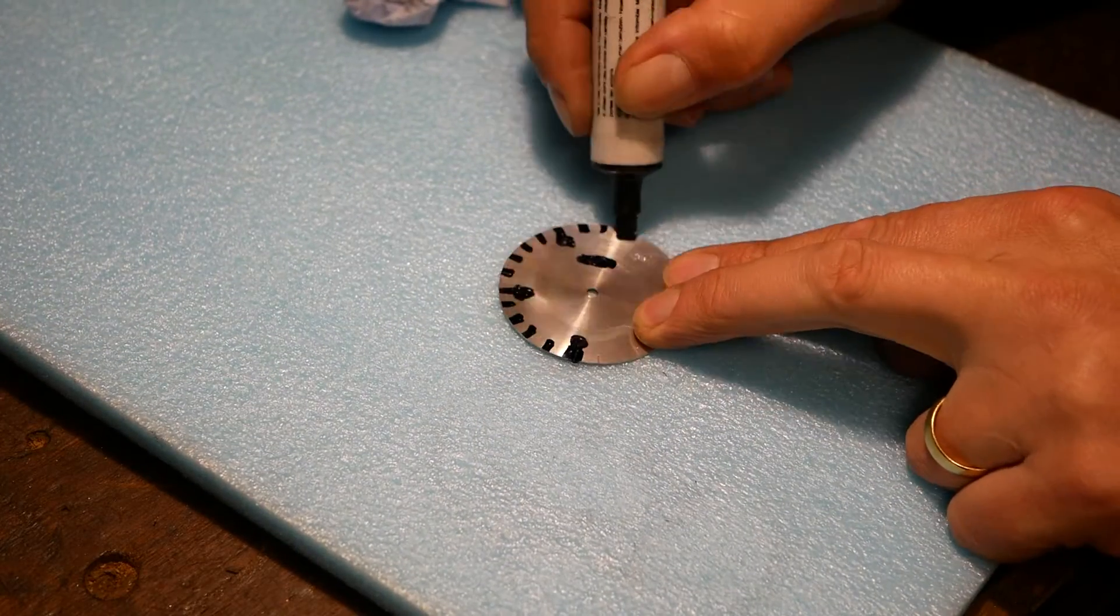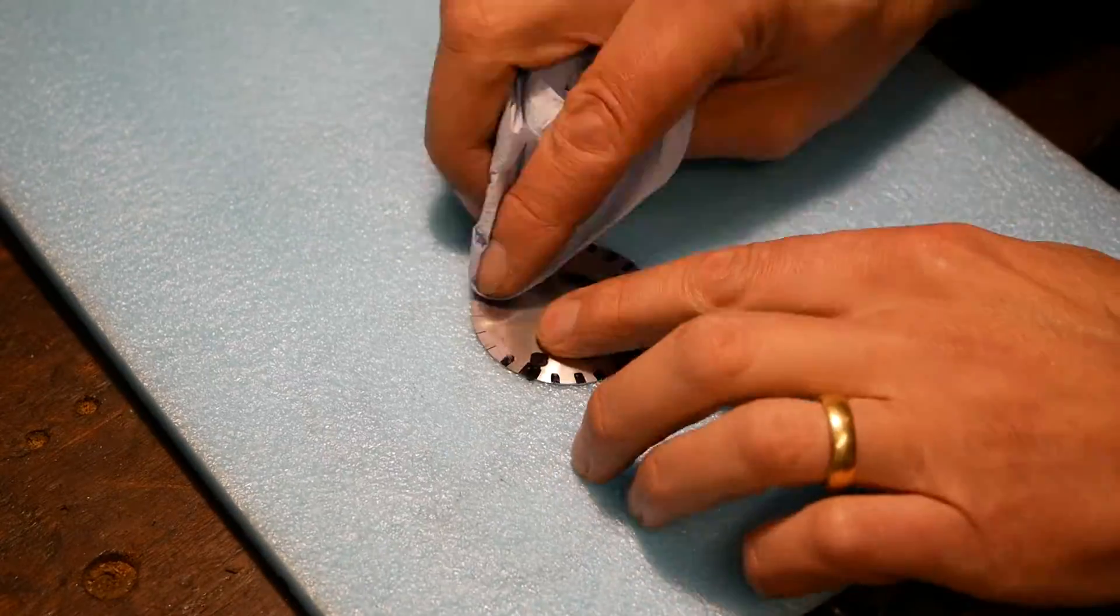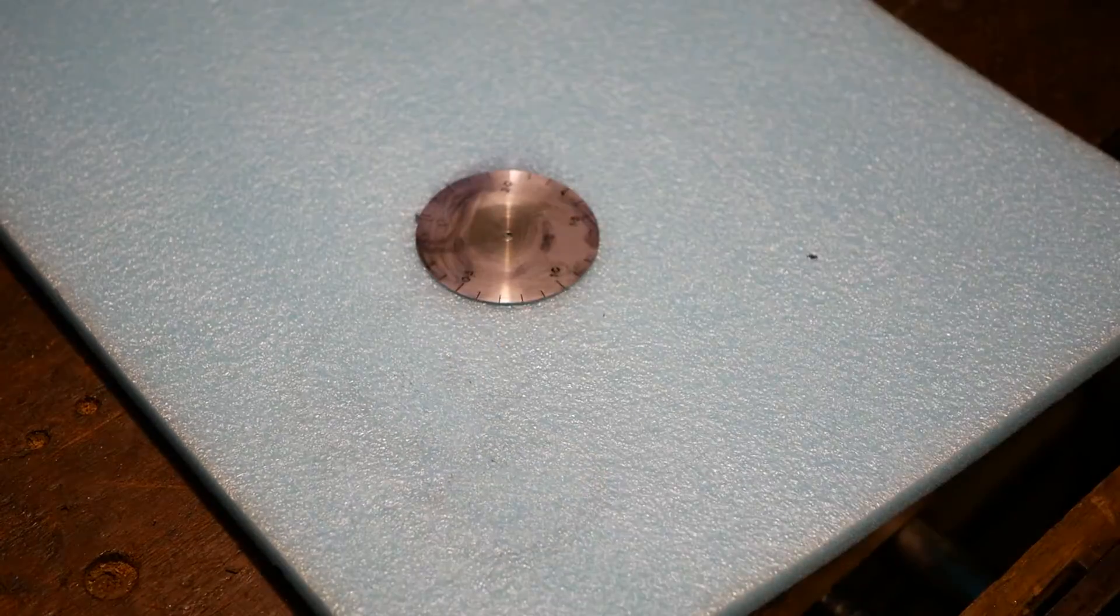To make the numbers and divisions more readable we use a marker pen. You can also use engraver's wax or paint.